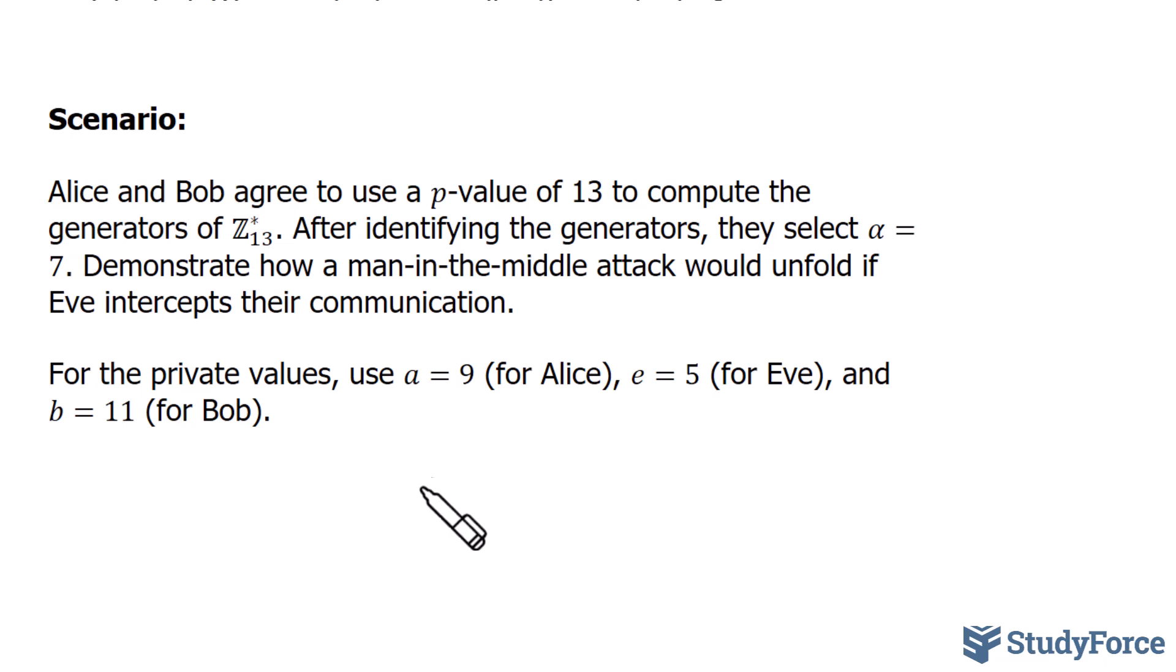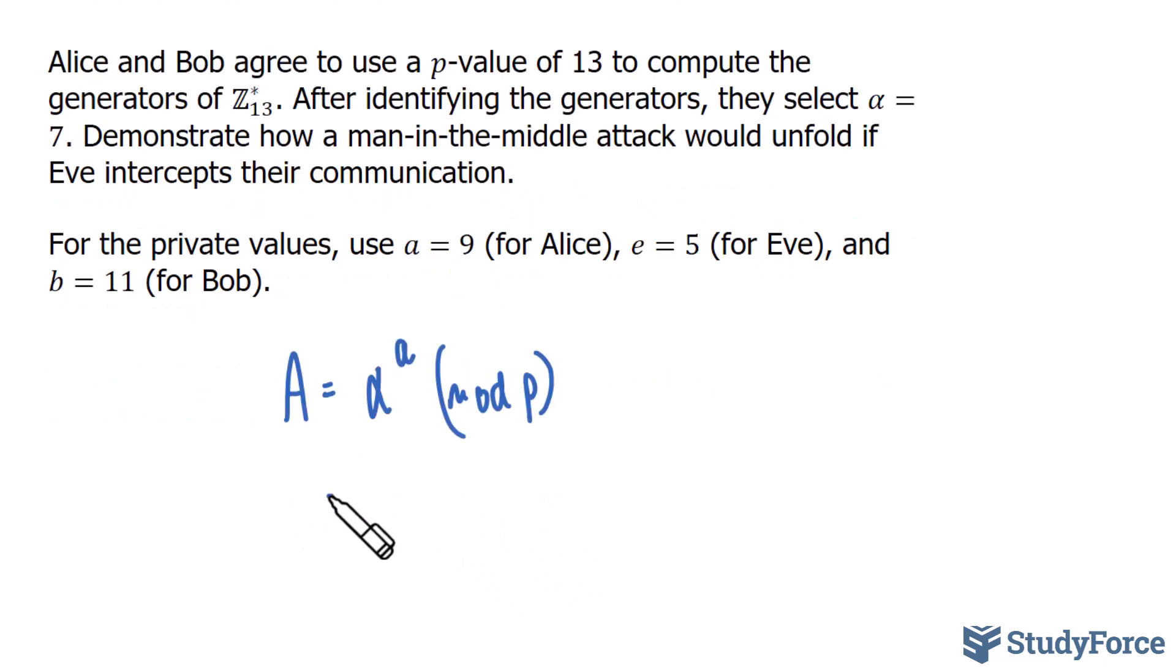To calculate the value of A, we'll use the formula A equals alpha raised to the power of the private value a, mod p. Remember, we said that alpha is 7, the value of a is 9, and the p-value is selected to be 13. If we compute 7 to the power of 9, mod 13, we get a value of 8.